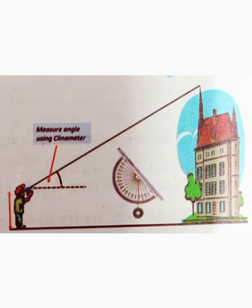Look at the top of the object through the straw. Find the angle where the string and the protractor intersect. Determine the angle of elevation by subtracting this measurement from 90 degrees. Let it be theta.